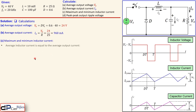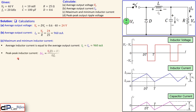The maximum and minimum inductor currents are given by the following expressions. First we need to determine the average inductor current, which equals the average output current — so the average inductor current IL is also 960 milliamps. The peak-to-peak inductor current is given by an expression involving the duty cycle, switching frequency, and inductor value itself, and that gives us 48 milliamps.